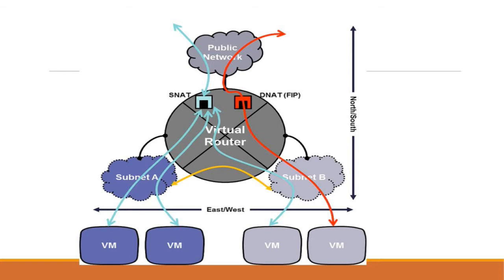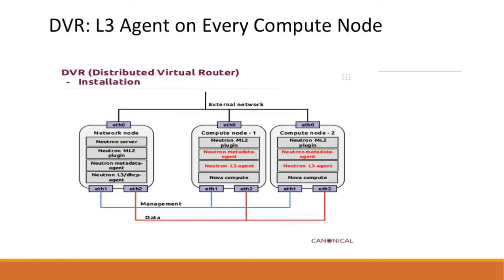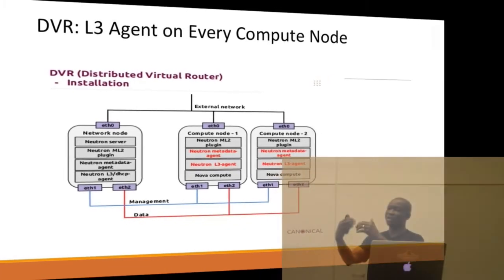The DVR solution splits this traffic: east-west traffic and north-south floating IP are moved down to every compute node, while north-south SNAT remains on the network node. Every compute node is now enabled to run an L3 agent. So when instances need to communicate east-west or via floating IP, they no longer have to traverse the central network node.